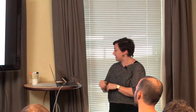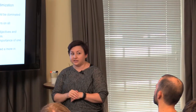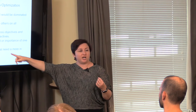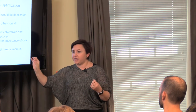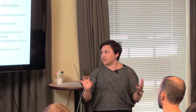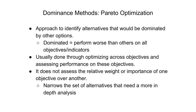Dominance methods — Pareto optimization, which is in Mike Dietz's forecasting book. This is an approach to identify alternatives that would be dominated by all other options, so it's almost like a screening approach. If you have a hundred different options, that's really labor intensive. Are there ones that are always going to be worse on the objectives we care about? We do this through optimizing across objectives and assessing the performance on those objectives. You can also include constraints — regulatory or other environmental constraints.